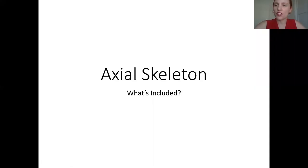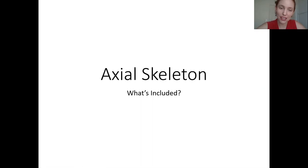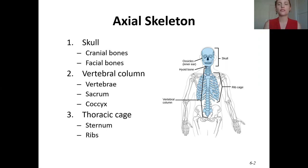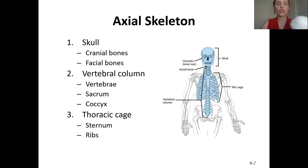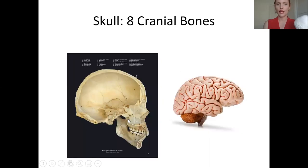Hi everyone, we are on the second lecture on the skeleton. We're going to start with the axial skeleton. The axial skeleton includes everything on the main axis of your body — the main middle part. It includes the skull, the thoracic cavity, and the vertebral column in the back. We'll talk about the skull first, then the vertebral column, then the thoracic cage.